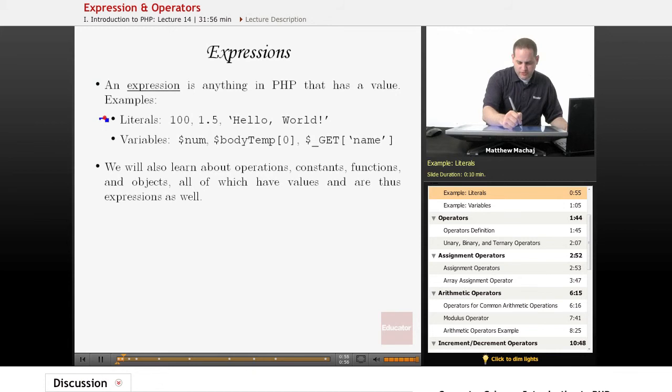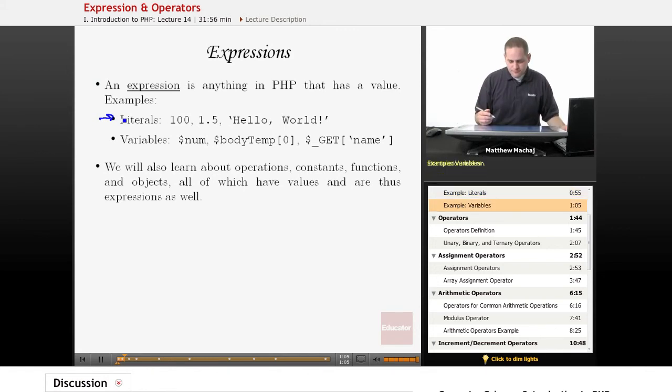So, for example, here we have three different literals: an integer, a float, and a string. Those obviously are literal values. They have a value, they're considered expressions in PHP. Additionally, variables have values. We set values to them. So, here we have an example of three different variables. We have a regular variable, an indexed array, and an associative array. All of those have values and they're considered expressions in PHP.